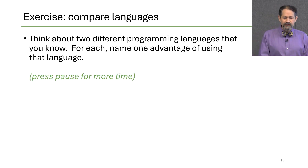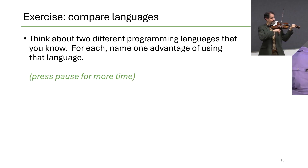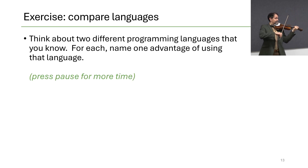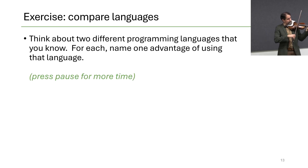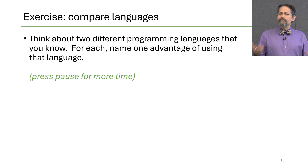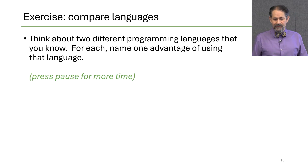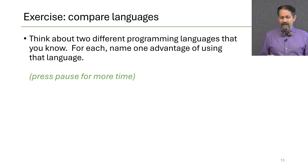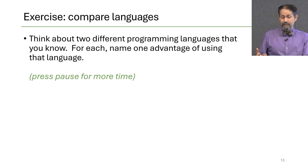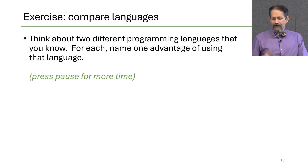Let's do an exercise: think about two programming languages you know and name one advantage of each. My answers: I like Rust because, like C, it gives full control of what the computer is doing so I can write fast and tight code, but it's also safe and provides great programming abstractions. I also like Scala — great for writing algorithms at a high level of abstraction in a functional programming style for higher-level programming tasks.